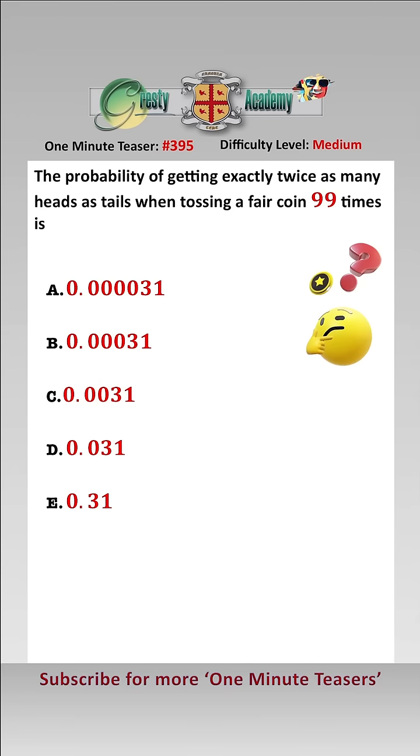We can model this using the binomial expansion, i.e. heads plus tails - that's one toss - and to the power of 99 is all 99 tosses.